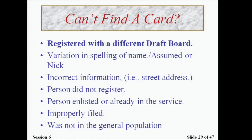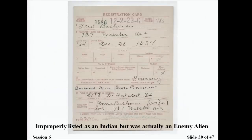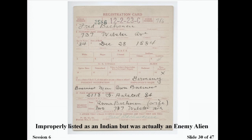This card shows a man who first put 'non-citizen Indian,' which was scratched through, and then 'alien non-declarant' was written instead. Note that he was born in and was a subject of Germany, who at the time would have been considered an enemy alien. He was improperly listed as an Indian but was actually an enemy alien.